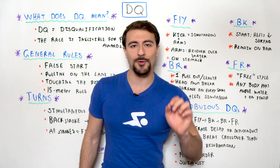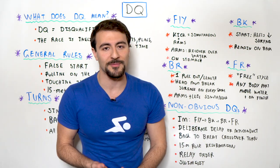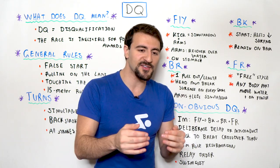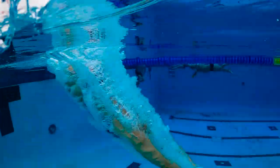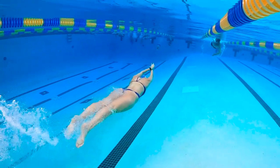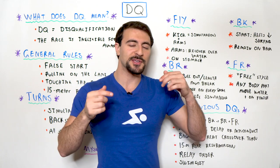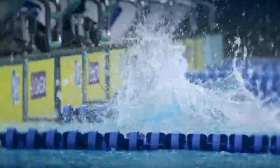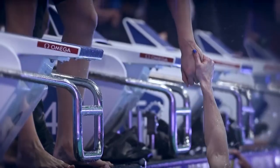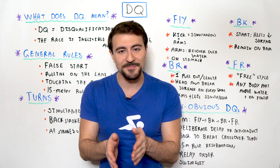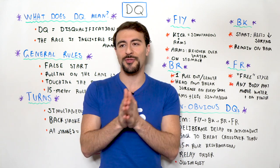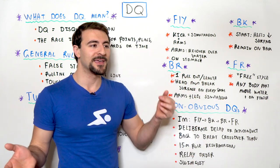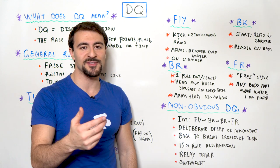Another tricky DQ is swimming the wrong relay order. You have four swimmers — guys, girls, or a mixed relay — but in the competition they swim in a different order than the names listed on the heat sheet. You could do everything right, break a world record, and still be disqualified because you swam in the wrong order. If Sally needs to go second on the heat sheet, Sally must swim second. If she swims first, third, or fourth, the relay is automatically disqualified and the time doesn't count for anyone — which is really devastating. This has happened at the World Championships and Olympic Games.